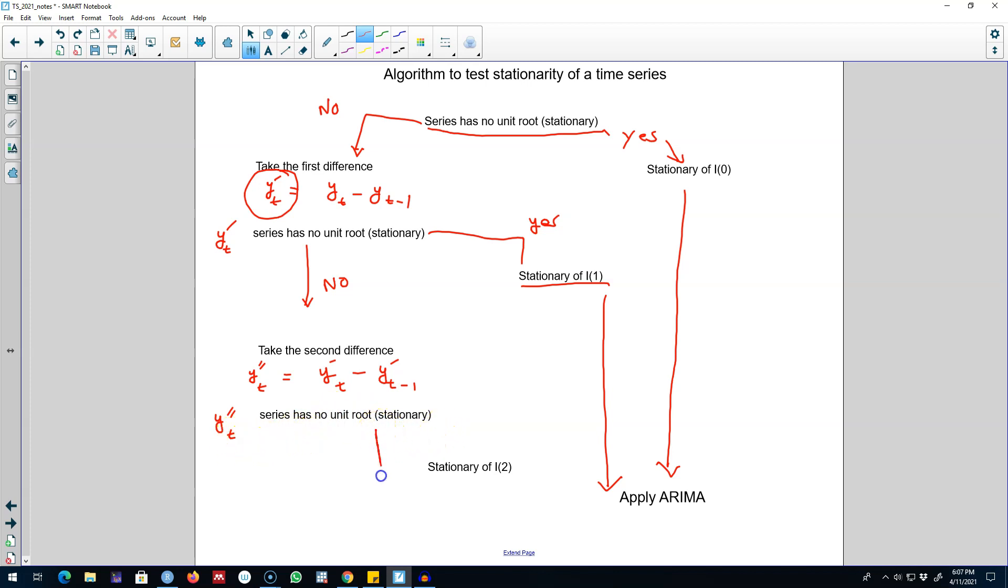In the majority of the cases, this series will be stationary, and now this series will be called stationary of order 2 or integrated of order 2, and we can go ahead and apply the ARIMA model on this yt double prime series.